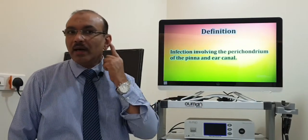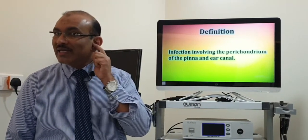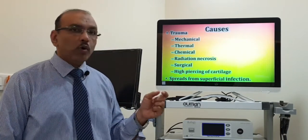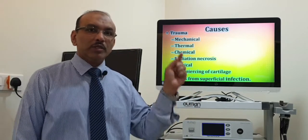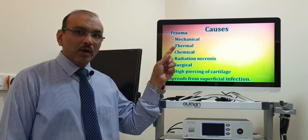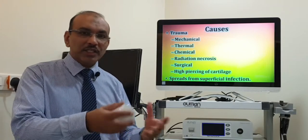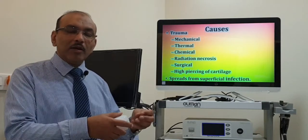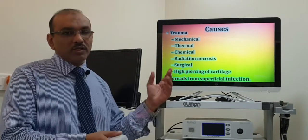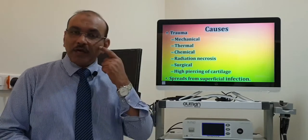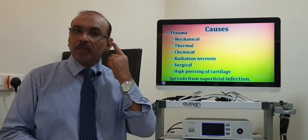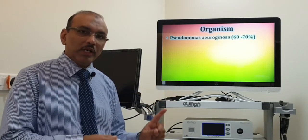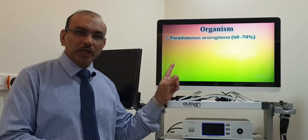There is infection of the pinna as well as the external ear canal, because this is one single unit. The most common causes are trauma, which can be mechanical — like an accident, assault, or sports injury — or thermal, chemical, or unclean surgeries. It can also be a spread of infection from the surrounding area into the pinna. The commonest organism involved in perichondritis is Pseudomonas, in 60 to 70% of cases.